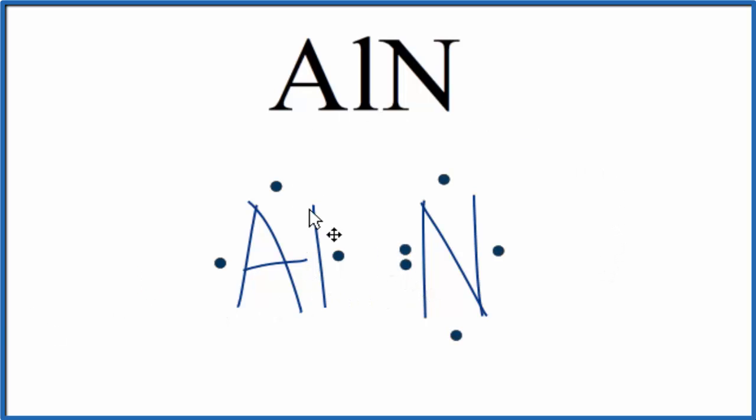So since we have an ionic compound, the metal transfers electrons to the non-metal, to here, here, we put them in pairs. And now nitrogen, that has an octet. So it has eight valence electrons, very stable.